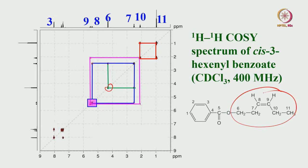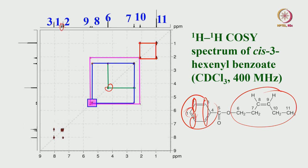What is left over is only the phenyl part. In the phenyl group, protons 1, 2, and 3 — I can simply make the assignment based on the intensity pattern. Two equivalent protons give double the intensity, and the single para proton gives half the intensity. So very easily you can identify them.